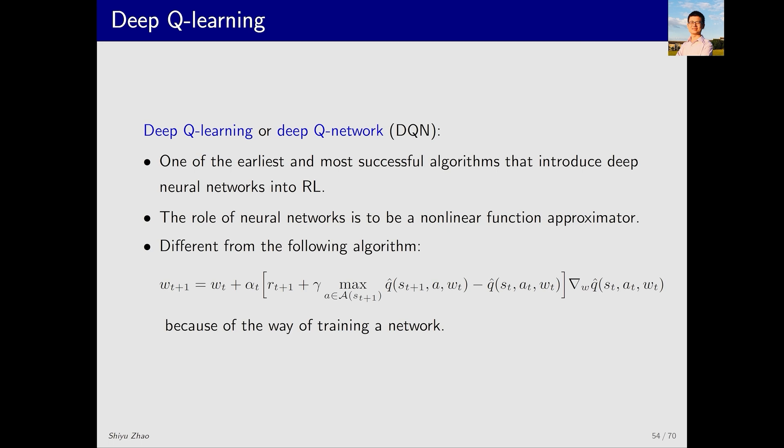Before we introduce Deep Q-learning I want to clarify a question. Some of you might ask, didn't we already introduce Q-learning with function approximation? Why can't we just use that algorithm? Why do we need to introduce Deep Q-learning? The reason is as follows. I draw a neural network where the input is s and a, the parameters are w and the output is q hat.